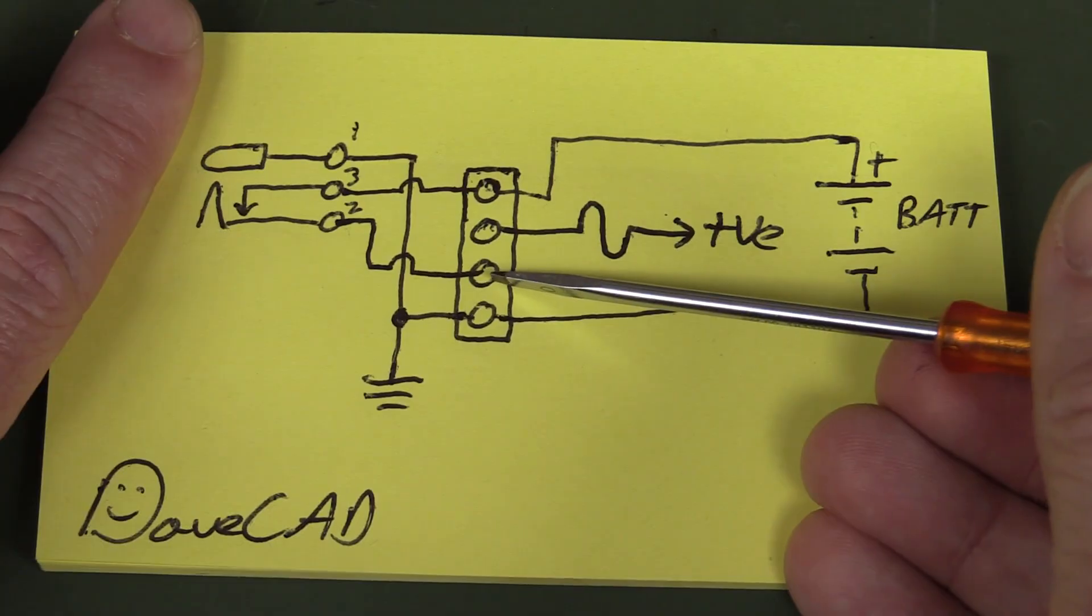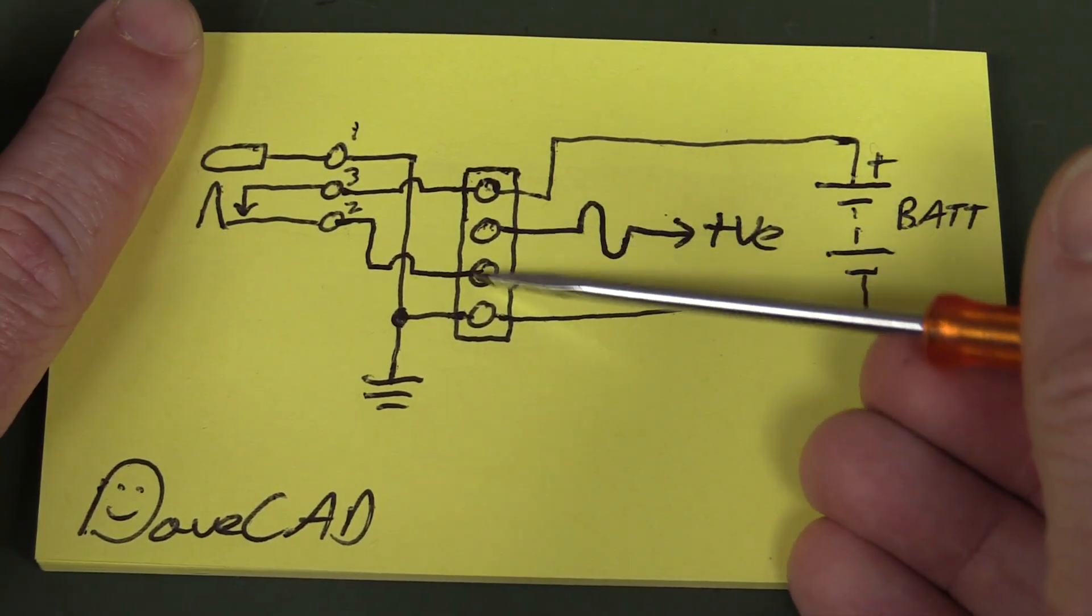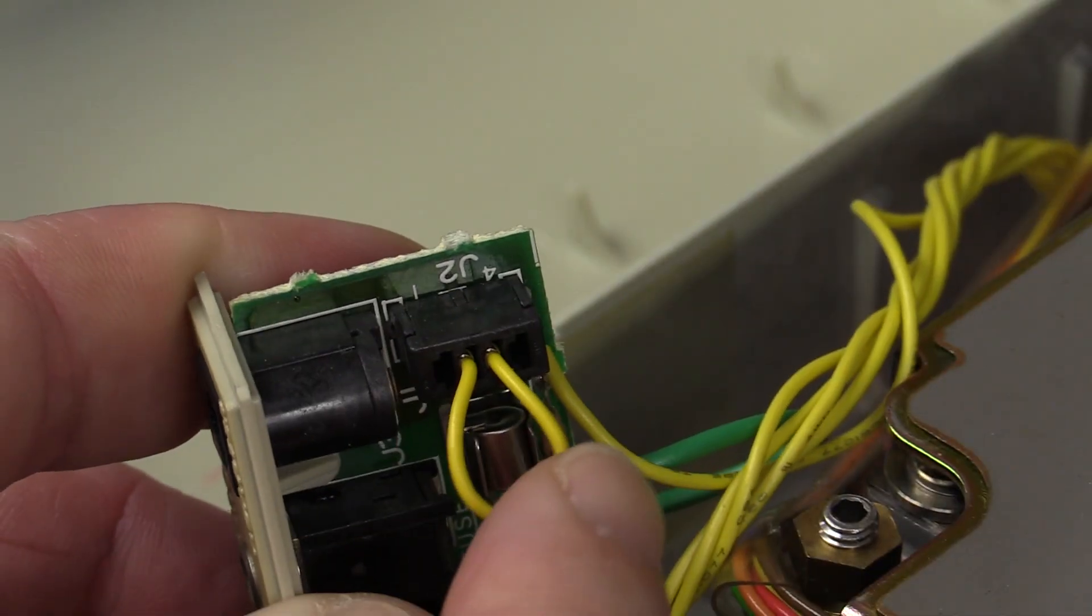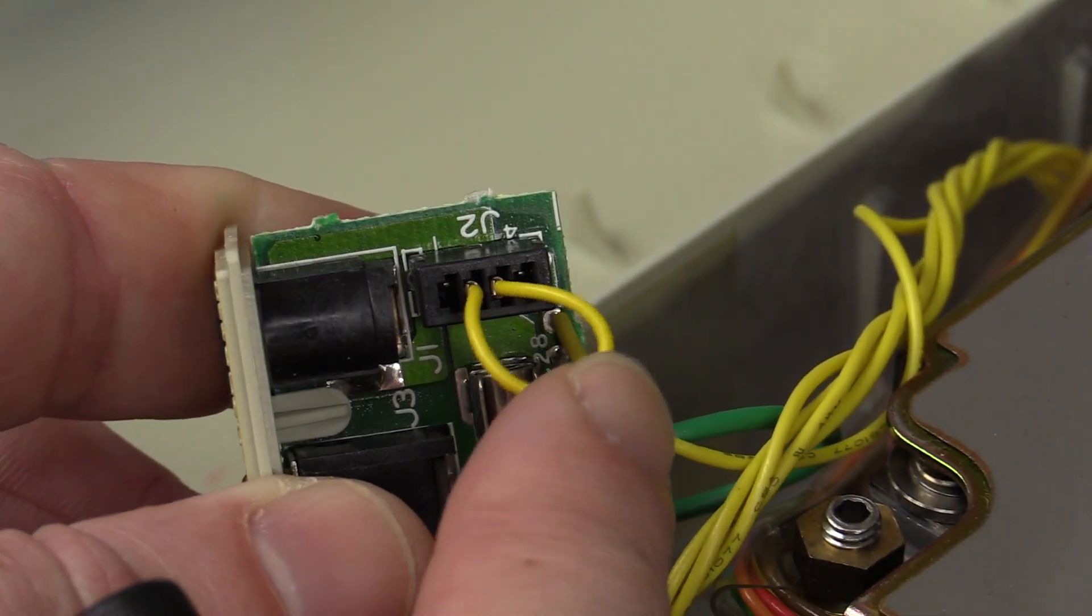Now, there's a jumper inside the product, which is just connected between here and here. And you can see that jumper link down in there. It's the center two pins.